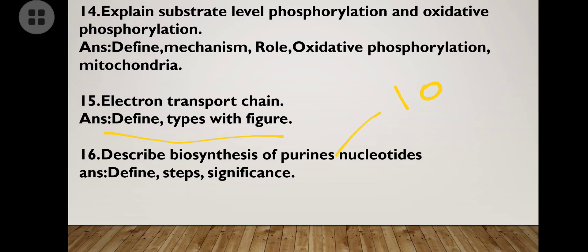Biosynthesis of purine nucleotides — this question may be asked in 10 marks, but it is kept here in five marks so that you can at least write a five-mark pattern even if asked for 10 marks. Define, write the steps and significance. If you don't know, define purines and pyrimidines, write examples and structures you know. If you don't know structures, just write the names.